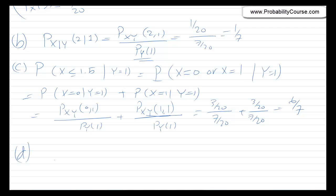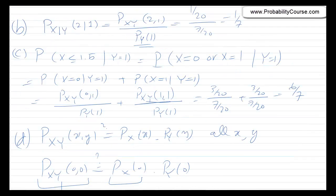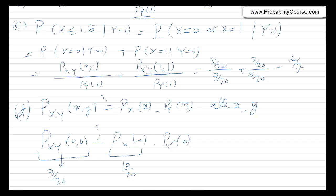X and Y are not independent. For independence we need P_{XY}(x,y) = P_X(x) · P_Y(y) for all x and y. Checking (0,0): P_{XY}(0,0) = 3/20, but P_X(0) · P_Y(0) = (10/20)(8/20) = 80/400, which does not equal 3/20. So X and Y are not independent. In the next video, we'll continue with conditional expectation and more interesting examples.